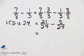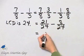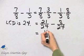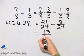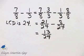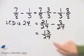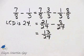What is 21 minus 8? 21 minus 8 is 13 over a common denominator of 24. This is in simplest form, so here is my difference in simplest form.